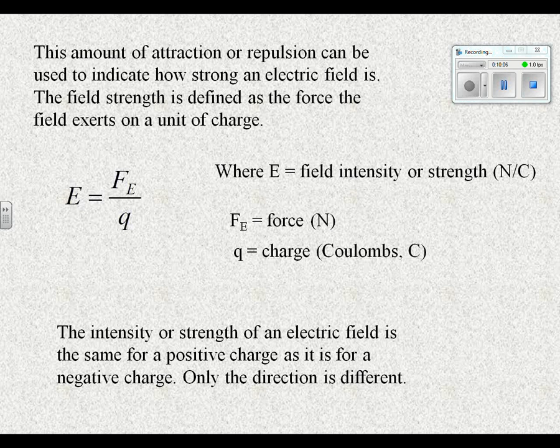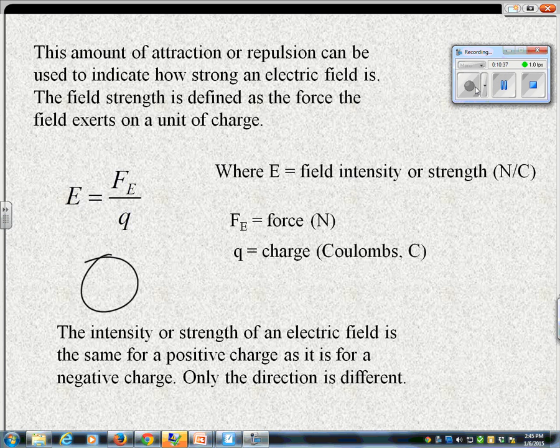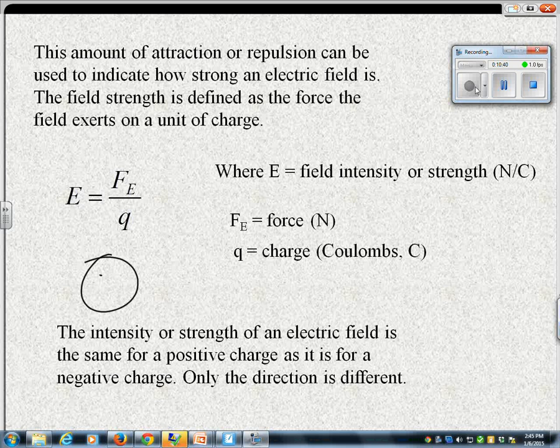Now, which is stronger, positive fields or negative fields? Neither. They're the same. The intensity or strength of an electric field is the same for positive charge objects as it is for negative charge, only the direction is different. Positive is not stronger than negative. Do not get that idea in your head. If I've got a charge here of 14 coulombs, but it's positive, and here I've got a charge of minus 14 coulombs, their field strength is the same. Just different direction.